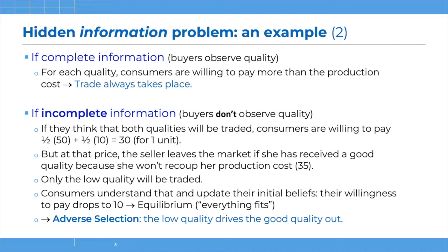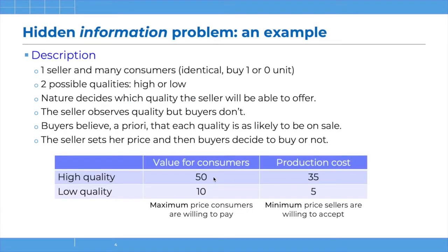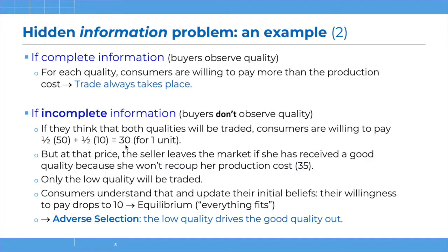Now if there is incomplete information — if buyers don't observe quality — our starting assumption is that both qualities would be on the market. What would be the willingness to pay that consumers have for a good whose quality they don't know? They believe it may be high quality with 50% chance or low quality with 50% chance. So the average valuation of a good of unknown quality is the average of 50 and 10, which is 30. Their expected willingness to pay is 30 per unit.